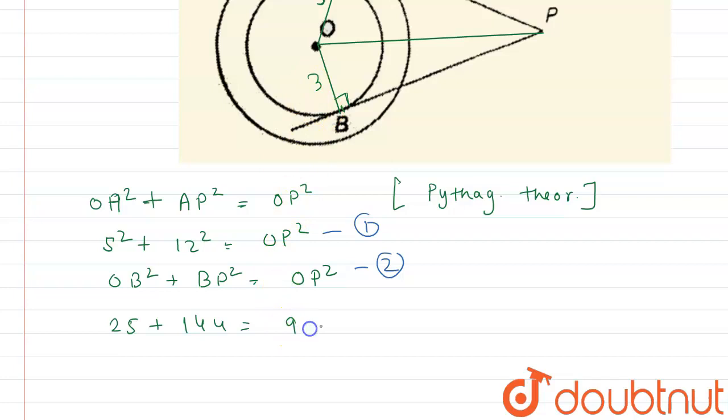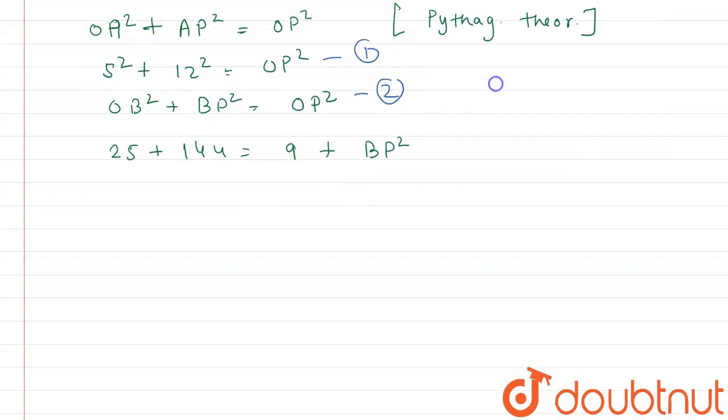So now when we solve this we get BP square equals 25 plus 144, we get 169 minus 9, so here we get 160.